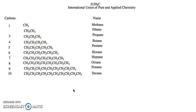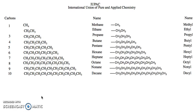We'll also have substituent groups coming off of these chains. The one-carbon chain is methane, but the one-carbon substituent is methyl. The two-carbon chain is ethane, but the two-carbon substituent is ethyl, and so on all the way to decane, where decyl would be the 10-carbon substituent.